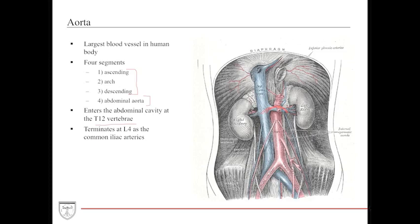The aorta terminates around L4 and splits into the common iliac arteries. The way to remember that is bifurcation 4 — so L4.